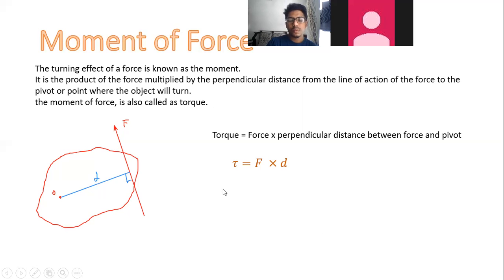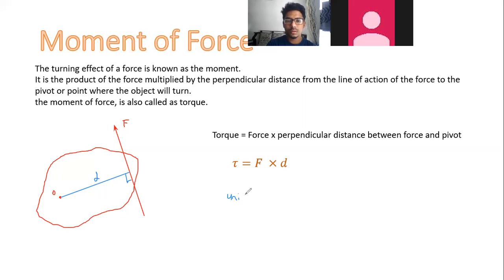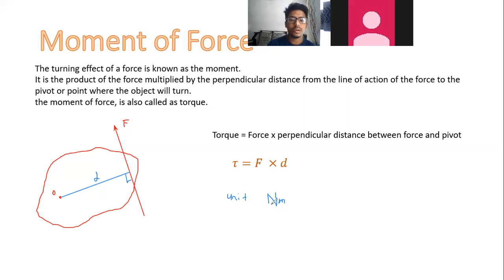What is the unit of τ — the moment of force? Newton meter. Very good, Newton meter. So the unit is Newton meter, because force has the unit of Newton and distance has the unit of meter. So the unit of τ becomes Newton meter.